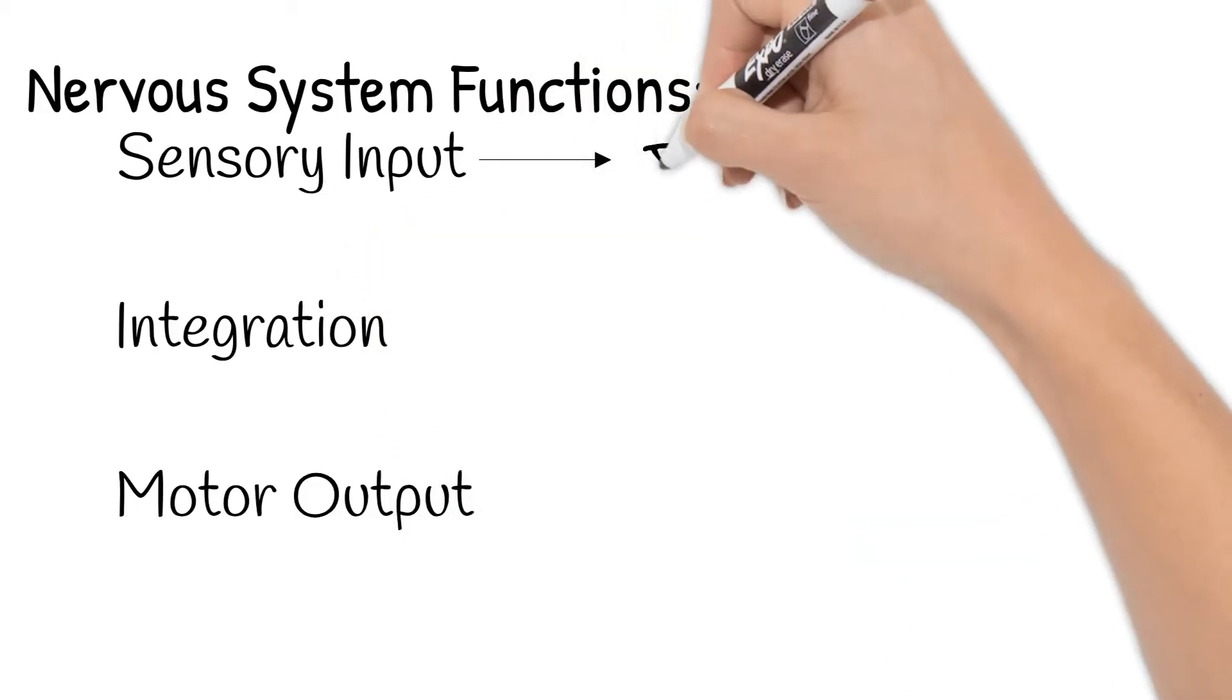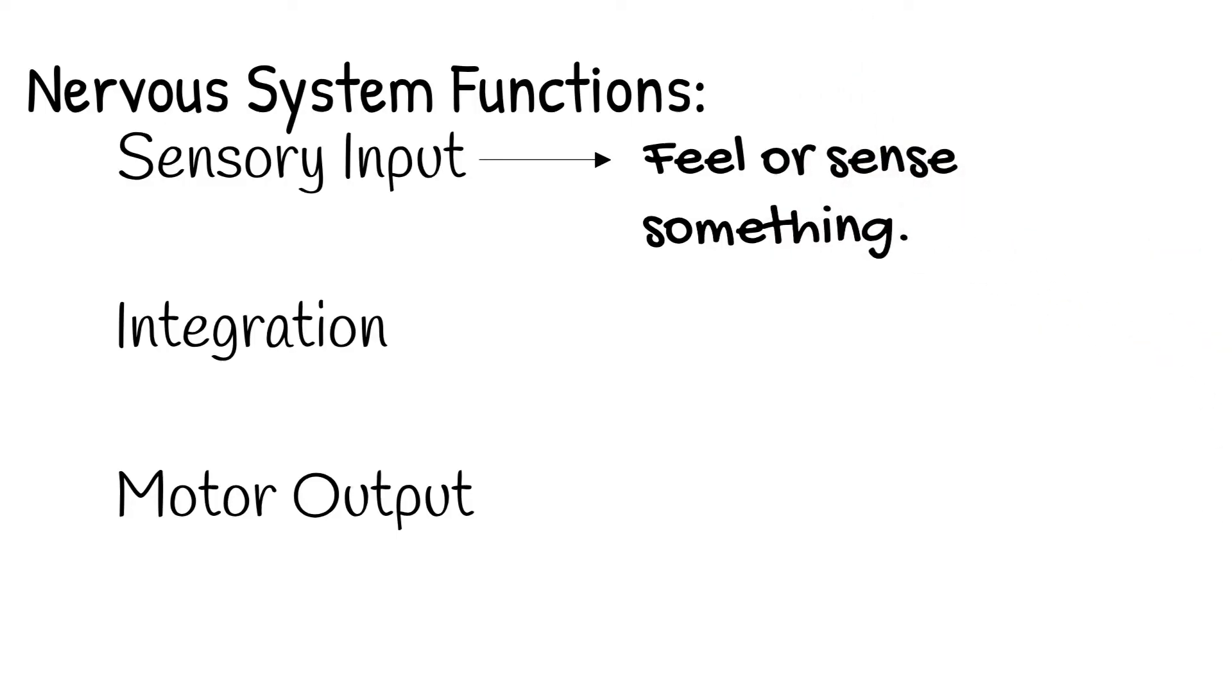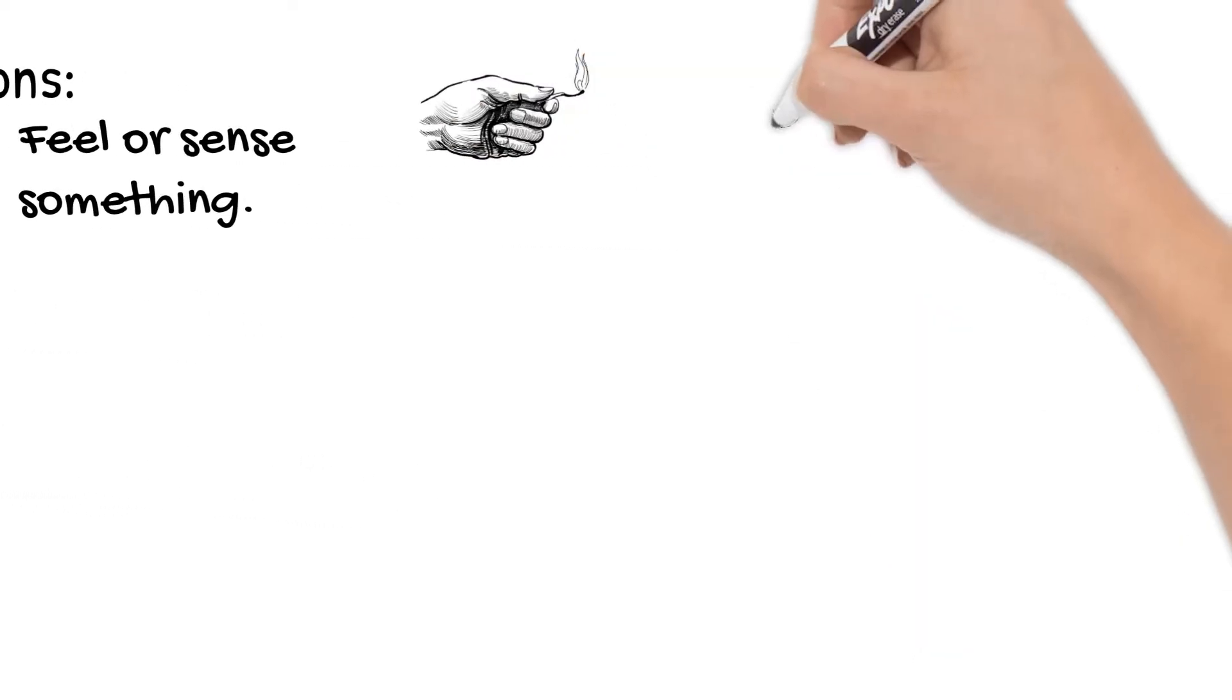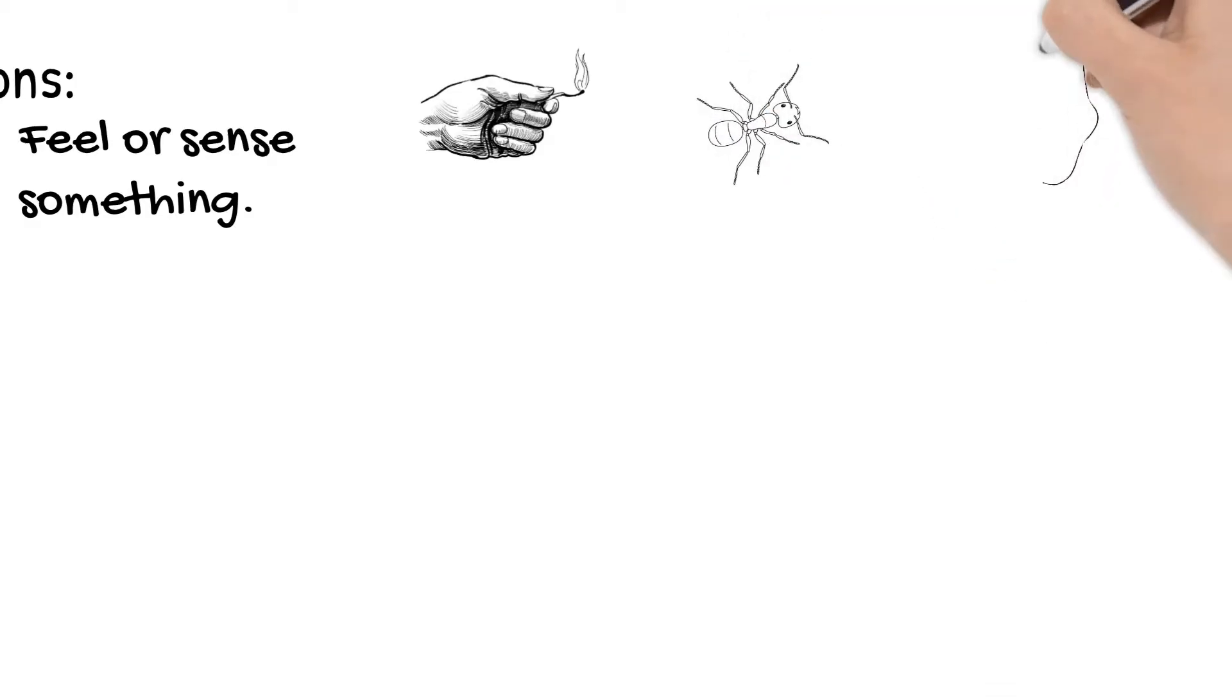Sensory input is when you feel or sense something with your body's five senses, such as heat from a match, an ant on your hand, or smell your brother's stinky socks. These are all examples of sensory input.